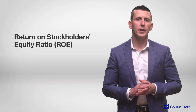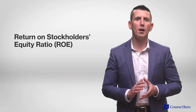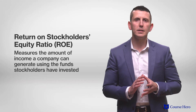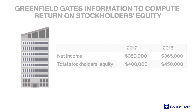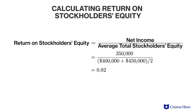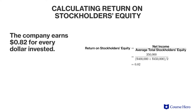Return on stockholders' equity, or simply return on equity, is also referred to as ROE. This ratio measures the amount of income a company can generate using the funds stockholders have invested. For example, Greenfield Gates Company has net income of three hundred and fifty thousand dollars in 2017. Its total stockholders' equity was four hundred thousand dollars in 2017 and four hundred and fifty thousand dollars in 2016. The return on equity ratio would be 0.82, indicating that the company can generate 82 cents of net income for every dollar it receives from an equity investor.